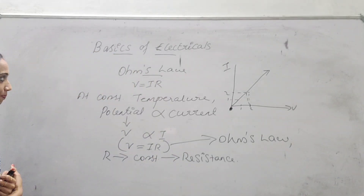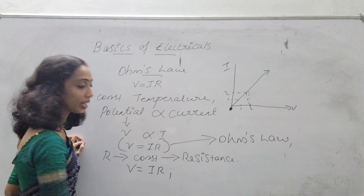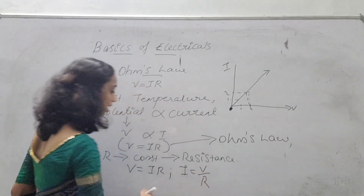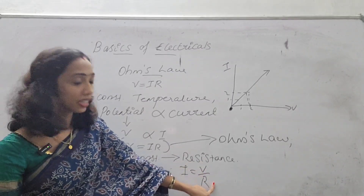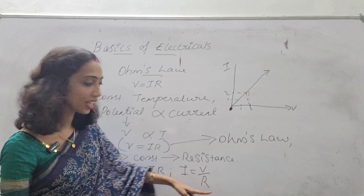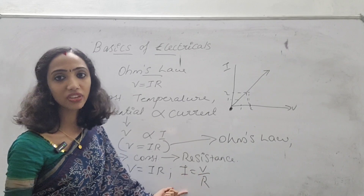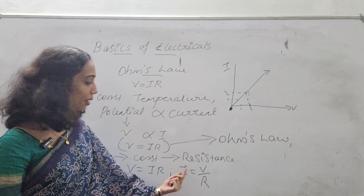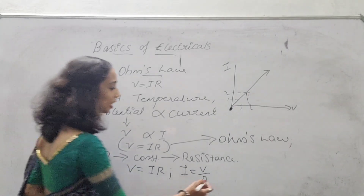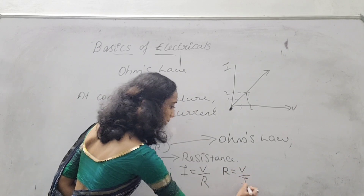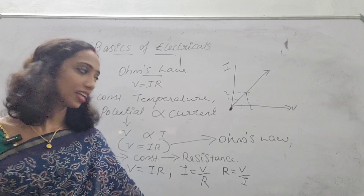This is Ohm's Law: V is equal to IR. We can also write current I is equal to V by R. So if V is proportional to I, and if R is in the denominator, then I is inversely proportional to resistance. And resistance R is equal to V by I. So we have three equations: the voltage equation V equals IR, the current equation I equals V by R, and the resistance equation R equals V by I. You can use any of these equations.